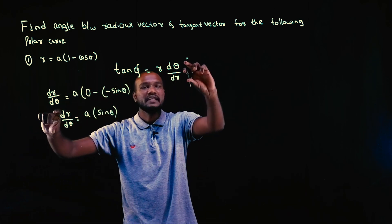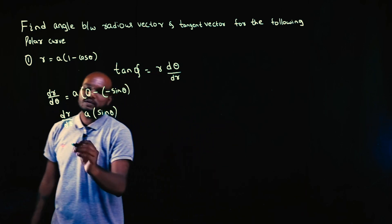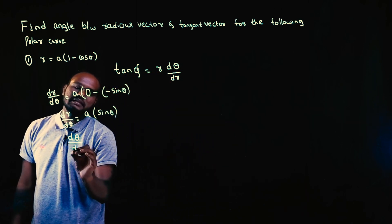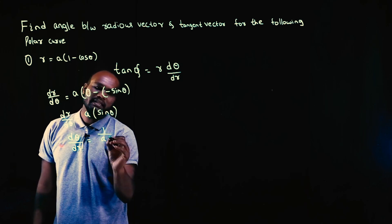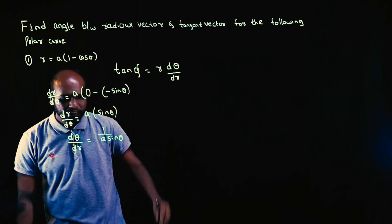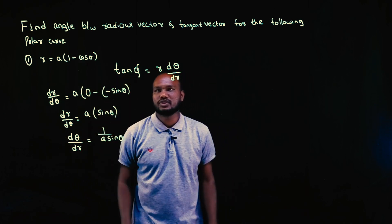We need dθ by dr. So what we will do? I will just reverse this. So I will get reverse of a reverse is 1 by a, sin θ reverse is 1 by sin θ. So I have dθ by dr. I have r in the question.